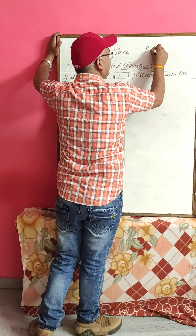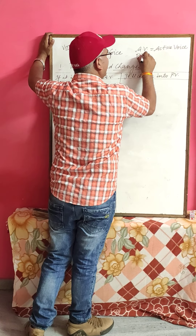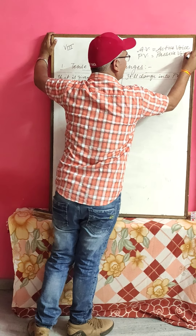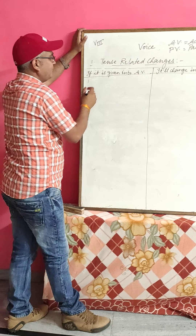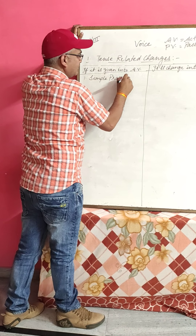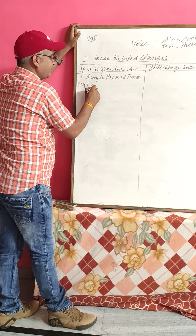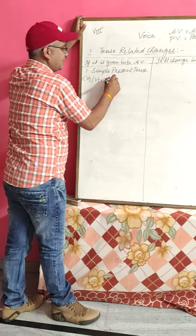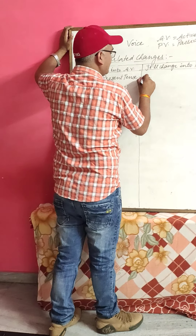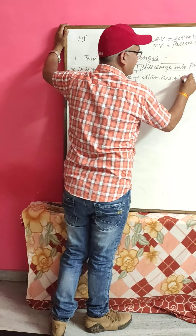Be careful — AV means active voice and PV means passive voice. The first rule: if we have simple present tense — simple present tense means either first form of the verb, or V1 plus s/es, or do/does — it will change into is/are plus third form of the verb.